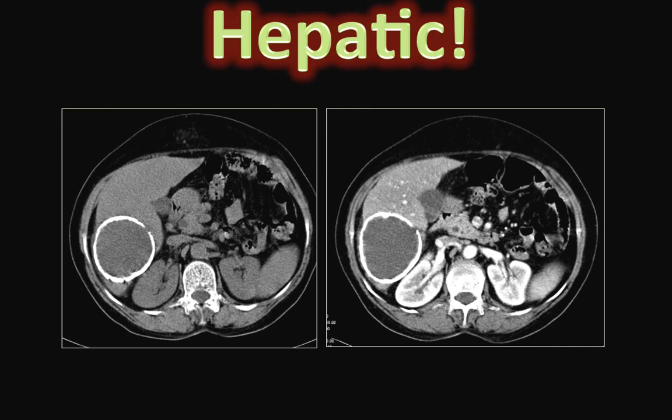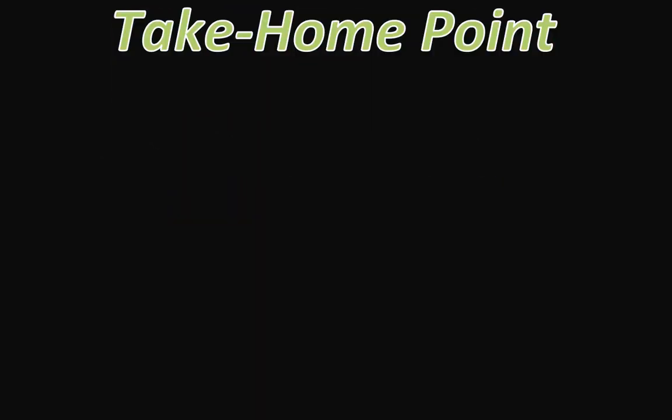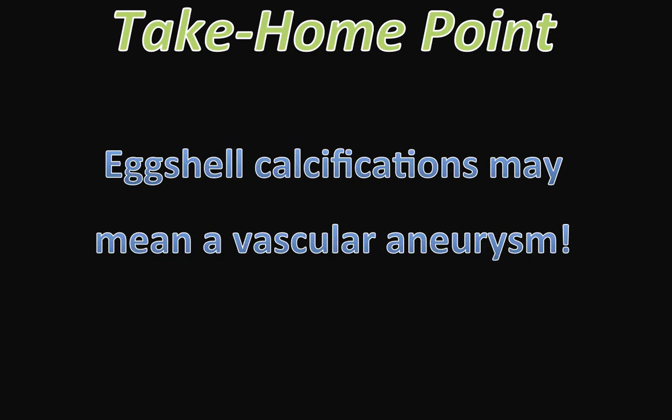Although hepatic cysts from various reasons are common, one of the common cystic abnormalities that show calcifications is that of a hydatid cyst. The take-home point from this case is to know the differential diagnosis for eggshell calcifications, but it's very important to remember that eggshell calcifications may mean a vascular aneurysm.